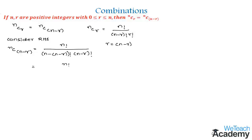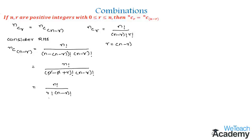This simplifies to n! divided by (n − n + r)! × (n−r)!, so in the denominator n minus n cancels and we get n! divided by r! × (n−r)!. This is precisely the formula for nCr, which is the required left-hand side.